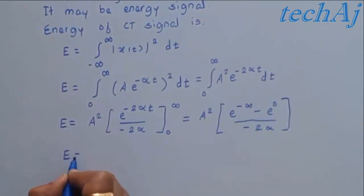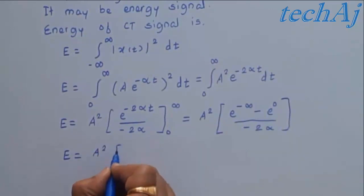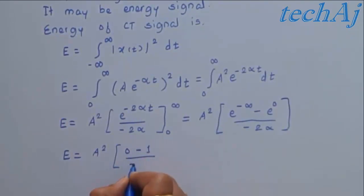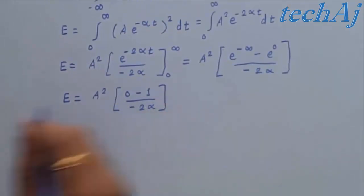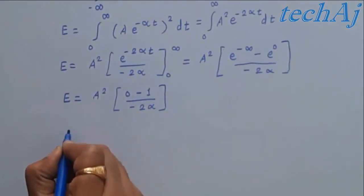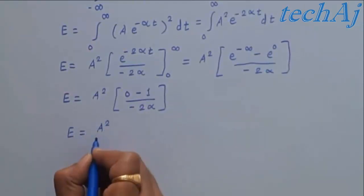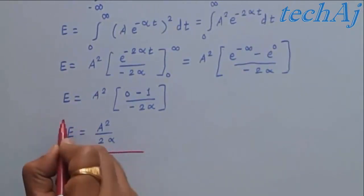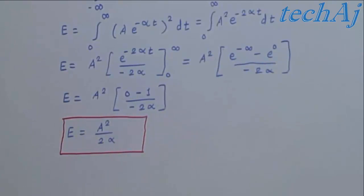Therefore, energy E equals A² multiplied by the bracket: e^(-∞) is 0, whereas e^(0) is 1, divided by -2α. Simplifying this, we get energy E = A²/(2α). Hence, we can say real exponential signals are energy signals, and the energy is A²/(2α). This is all about the energy of the real exponential signal.